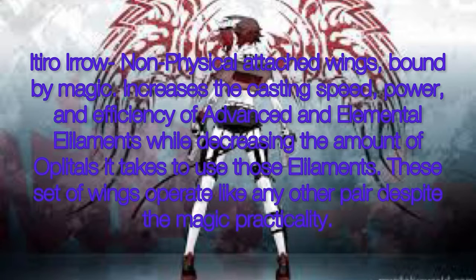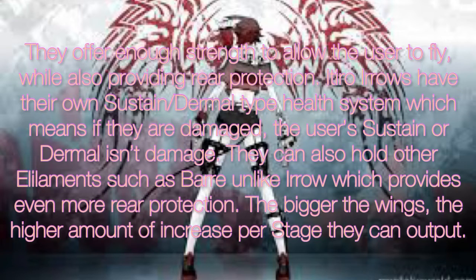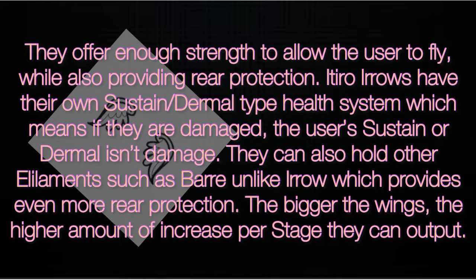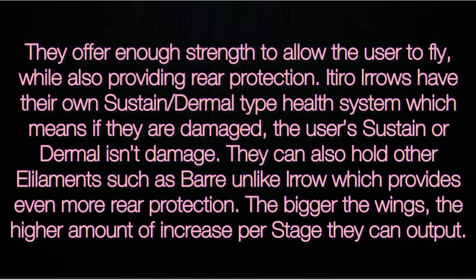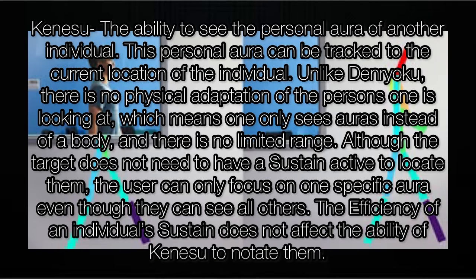Era is a non-physical attached wings bound by magic. It increases the casting speed, power, and efficiency of advanced and elemental elements, while decreasing the amount of oplotals it takes to use dual elements. These wings operate like any other pair — despite the magic practicality, they offer enough strength to allow the user to fly while also providing rear protection. Era wings have their own sustain/dermal-type health system. They can also hold other elements such as berry, unlike arrow, which provides even more rear protection. The bigger the wings, the higher the amount of increase per stage they can output.